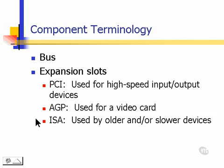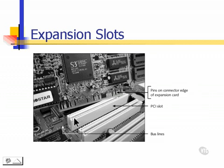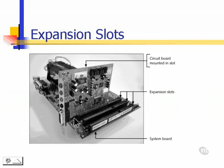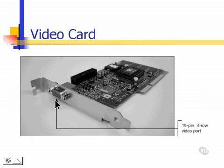We can follow the logical path through the computer by looking at the bus lines on the bottom of a motherboard, starting underneath where the processor is installed. We can follow the bus lines through the motherboard to the expansion slots to see how everything is connected. Expansion slots allow the computer to be expanded with devices — for example, a sound card. Other types of expansion cards include a network interface card, an internal modem, an input-output controller card for a high-speed hard drive, a joystick card, and possibly a video card. You can always tell a video card because it has a 15-pin, three-row video port, and typically that's the only port on a video card.